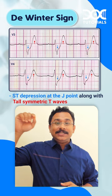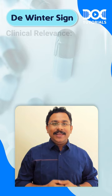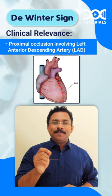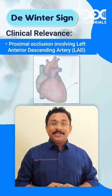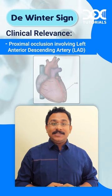What is the clinical relevance? The De Winter sign is suggestive of a proximal occlusion involving the left anterior descending artery. It is associated with high mortality risk and is considered to be equivalent to ST elevation myocardial infarction.